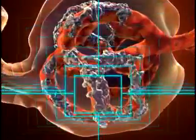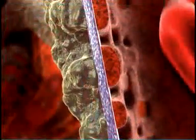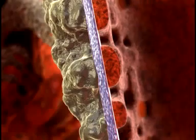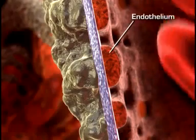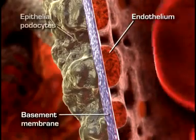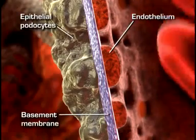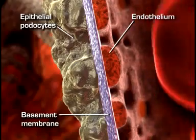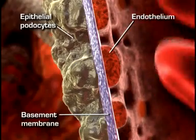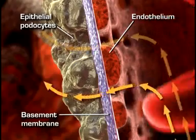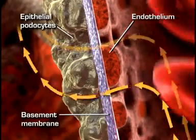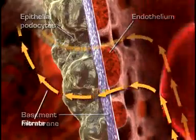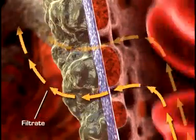Plasma-like fluid is filtered from the capillary blood into Bowman's space through the glomerular filtration membrane. The glomerular filtration membrane consists of three layers of capillary wall: the endothelium, the basement membrane, and the epithelium. This membrane allows some particles from the blood to pass through, but not all. The fluid that is filtered from the capillary blood into Bowman's space is called filtrate and forms the primary urine.